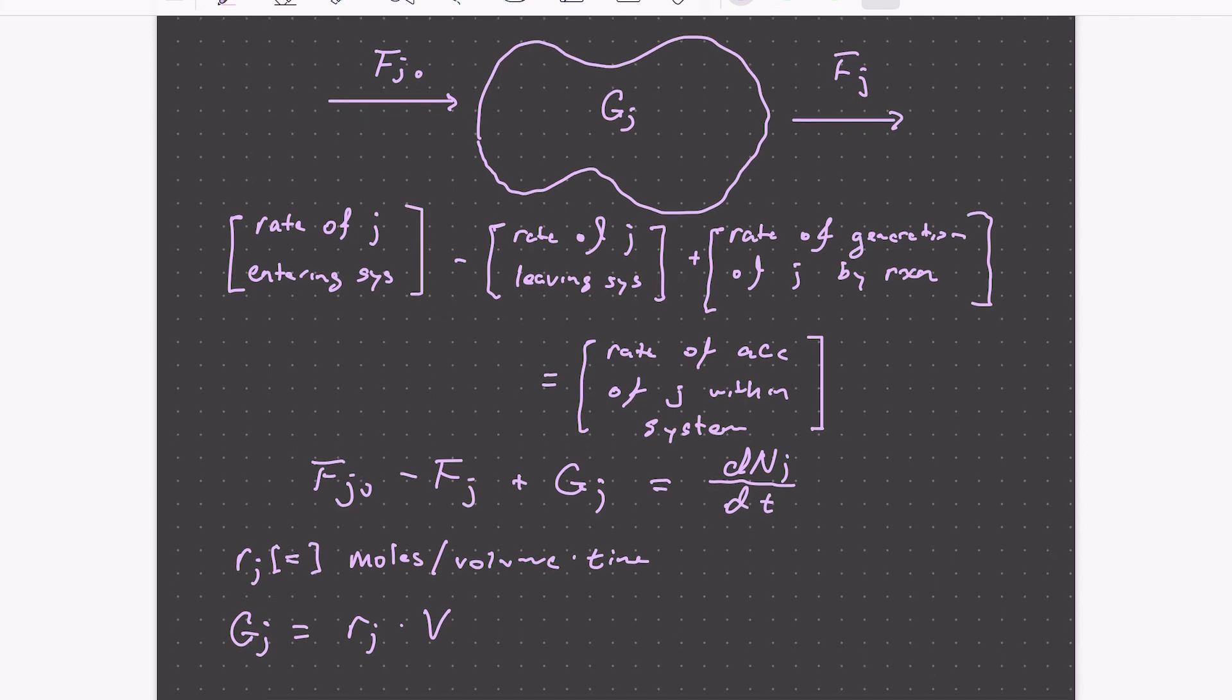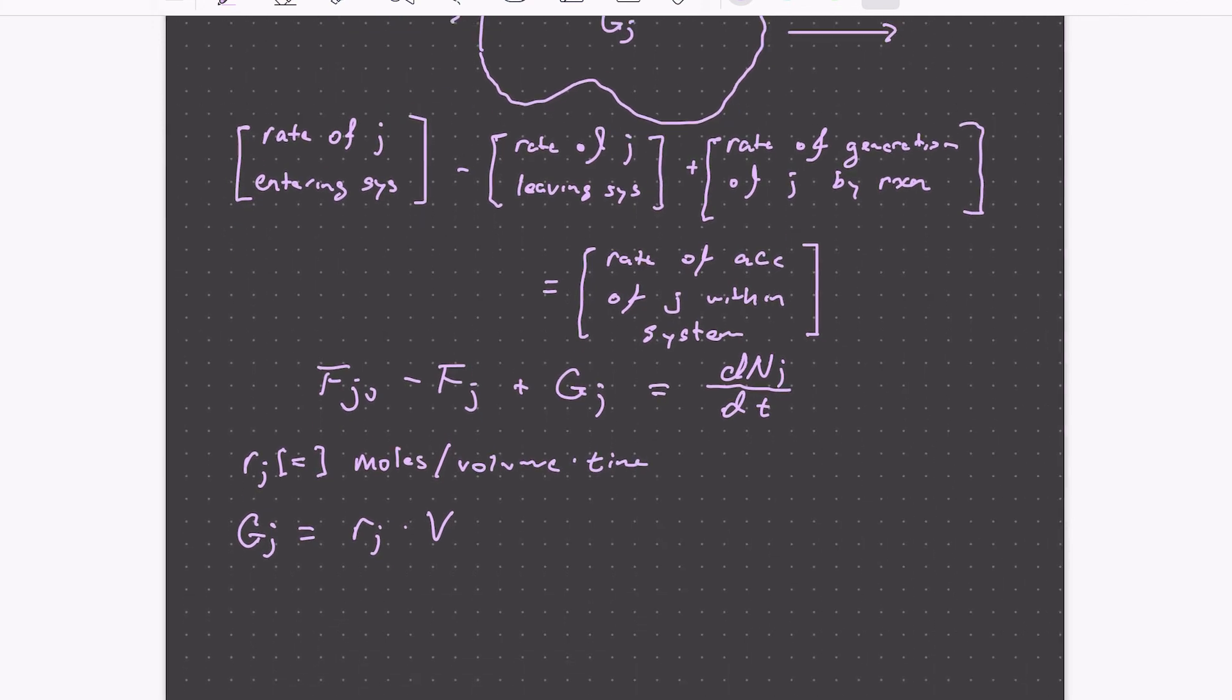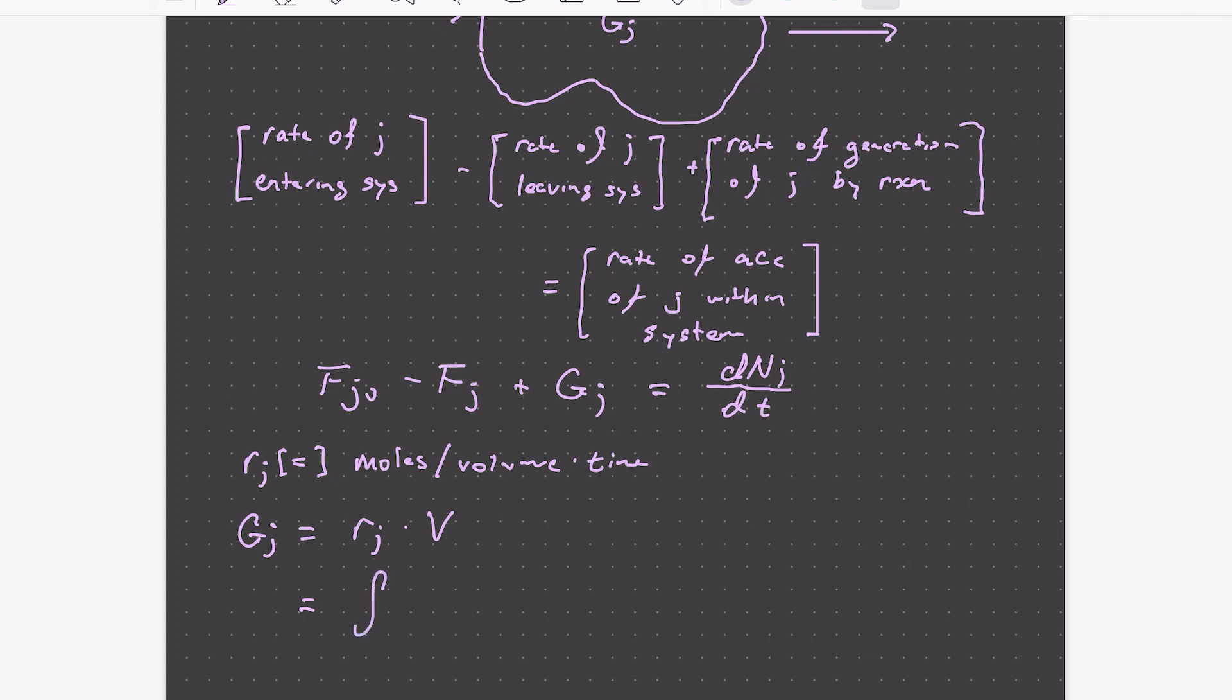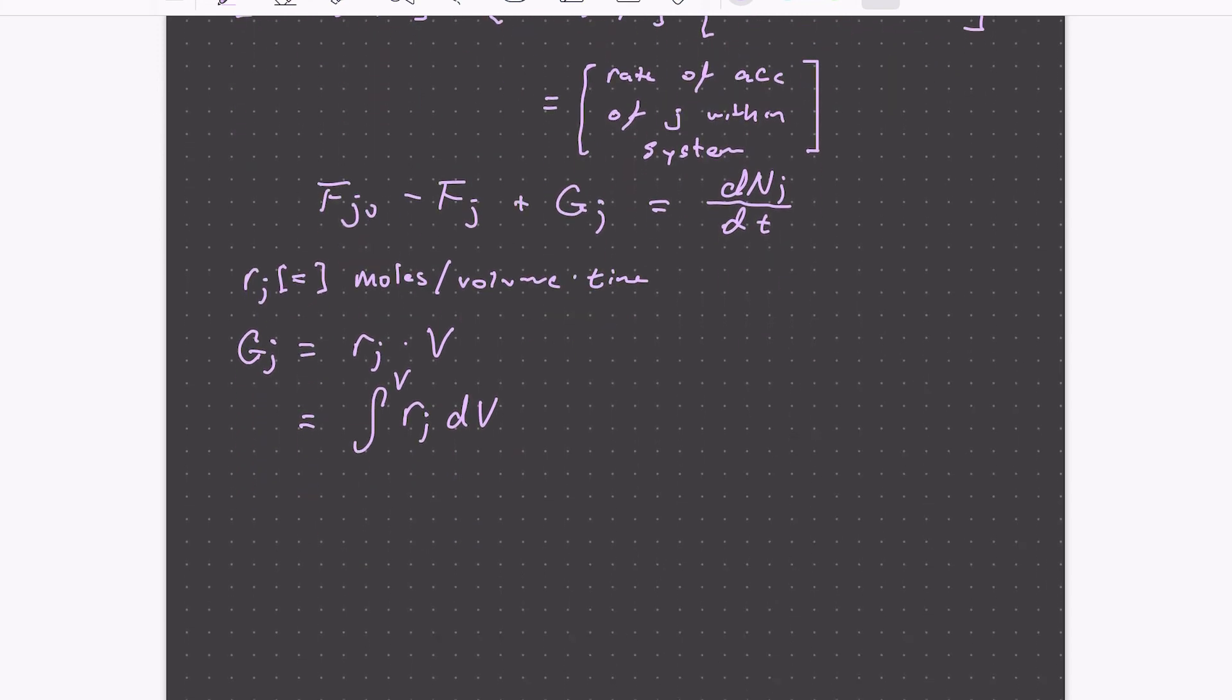But if these are spatially non-uniform, then we can describe G of J as the integral of R of J dV over the entire system volume. So for the more general case, we'll write out now the final general mole balance. The molar flow rate of J in minus the molar flow rate of J out, plus the generation rate, this is the integral of R of J dV, is equal to the rate of accumulation of J within the system.